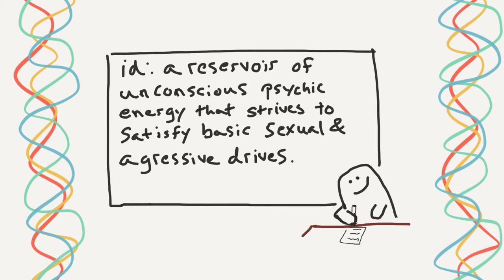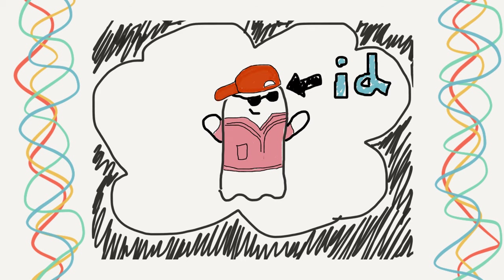Now, starting with the id, it's a reservoir of unconscious psychic energy that, according to Freud, strives to satisfy basic sexual and aggressive drives. So, the id operates on the pleasure principle, essentially demanding immediate gratification in most things. We can most successfully see the id as a newborn baby.